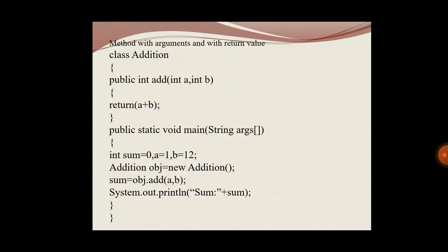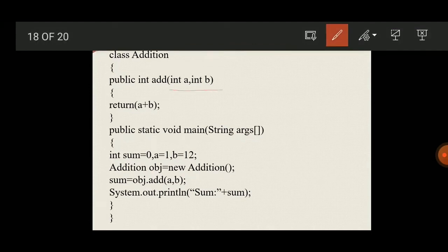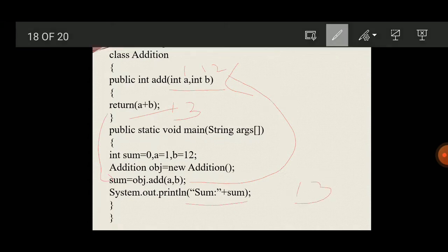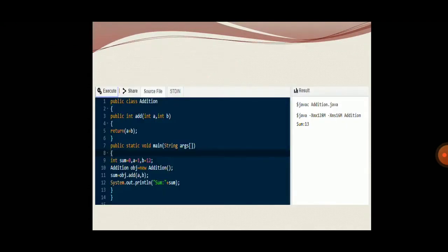The next one is the method with argument and with return type. In this type, there is data transfer between the calling method and called method. When the method is called, program control transfers to the called method with arguments, executes the method, and returns a value back to the calling method. In the example, the method takes int a and int b and returns the value. The method is called with a equals 1 and b equals 12, the values are added to give 13, which is returned to sum and printed. The same program is executed and we got the output as 13.